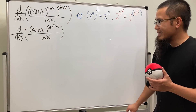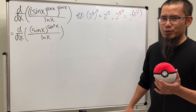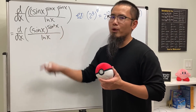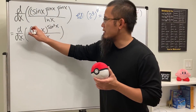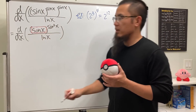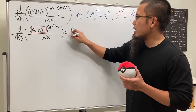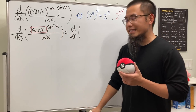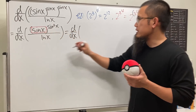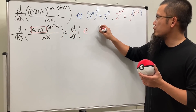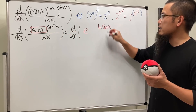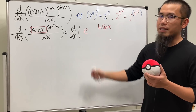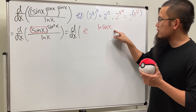What can we do next? Quotient rule — but we have a function raised to a function power. So let's rewrite sin(x) as follows: since we prefer base e, we write sin(x) as e raised to the ln(sin(x)) power, because e and ln cancel and we just get sin(x) back.